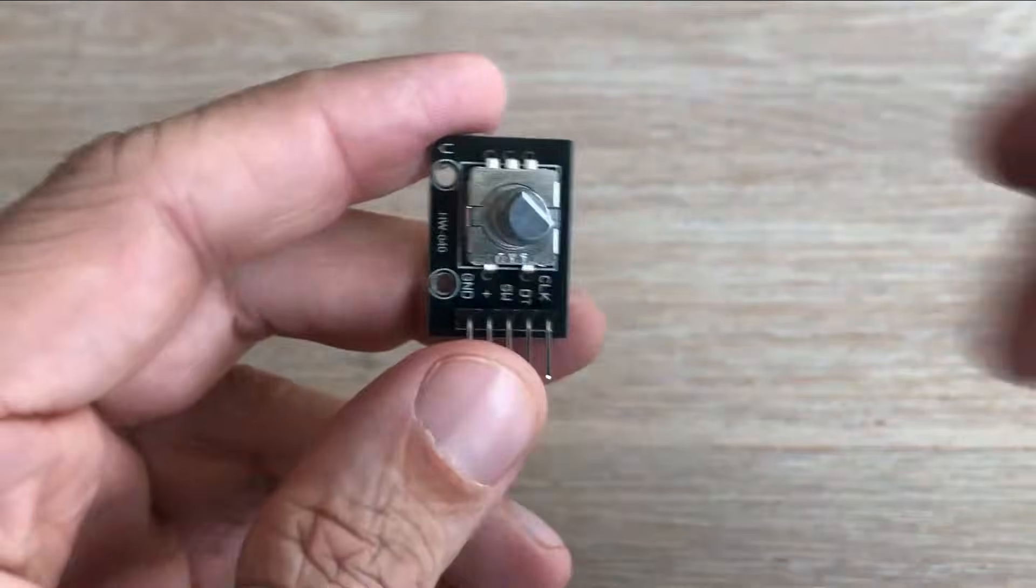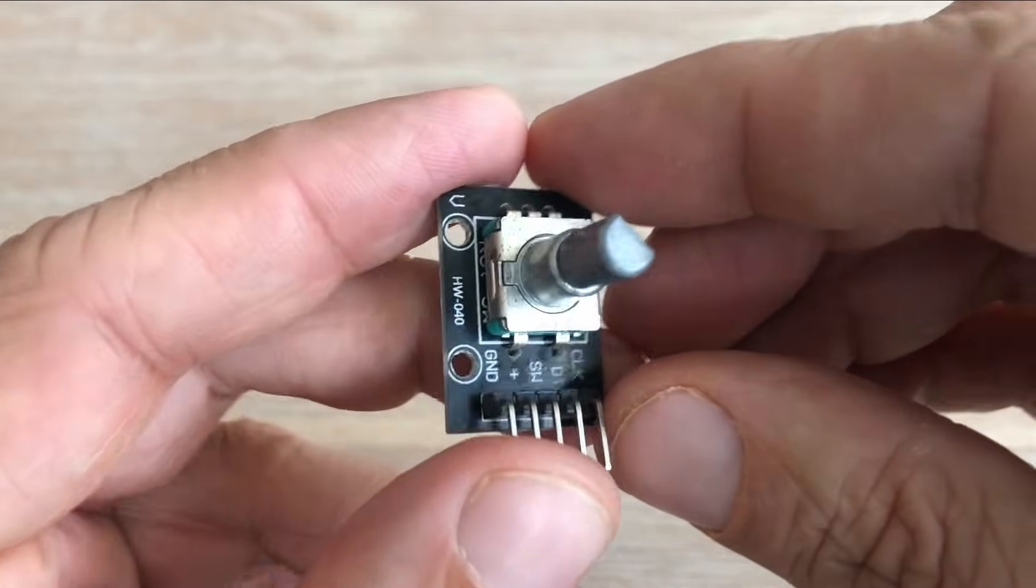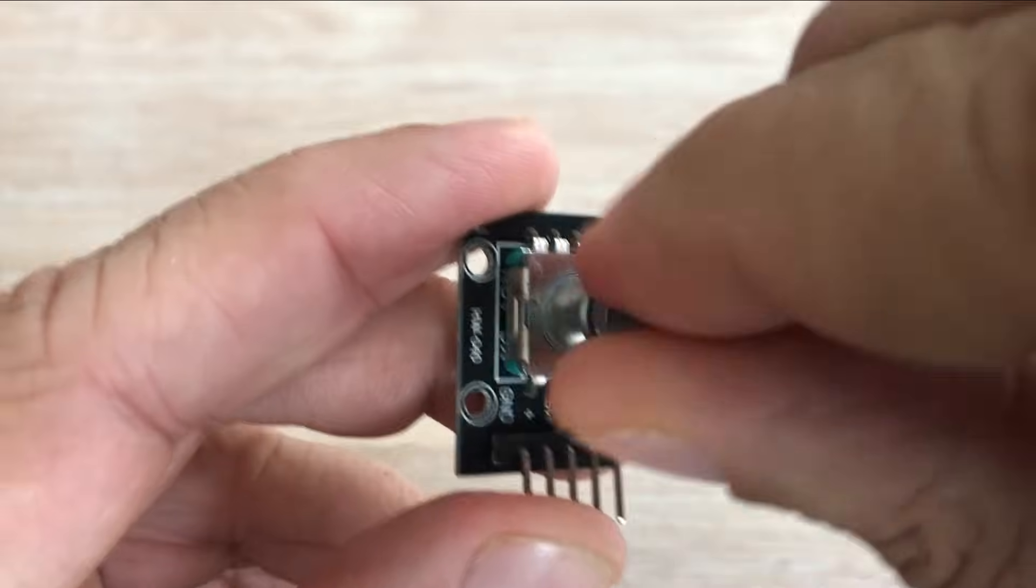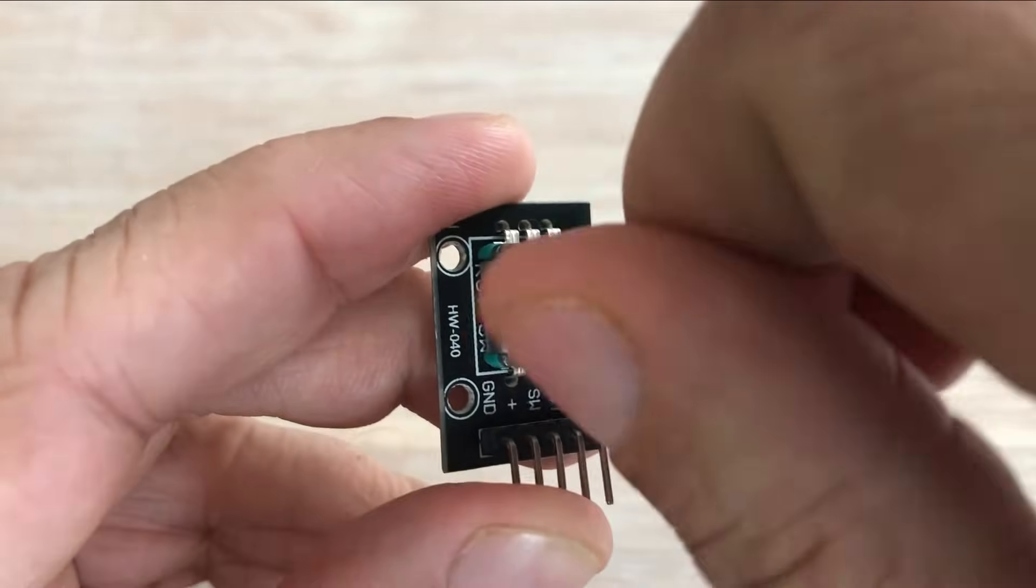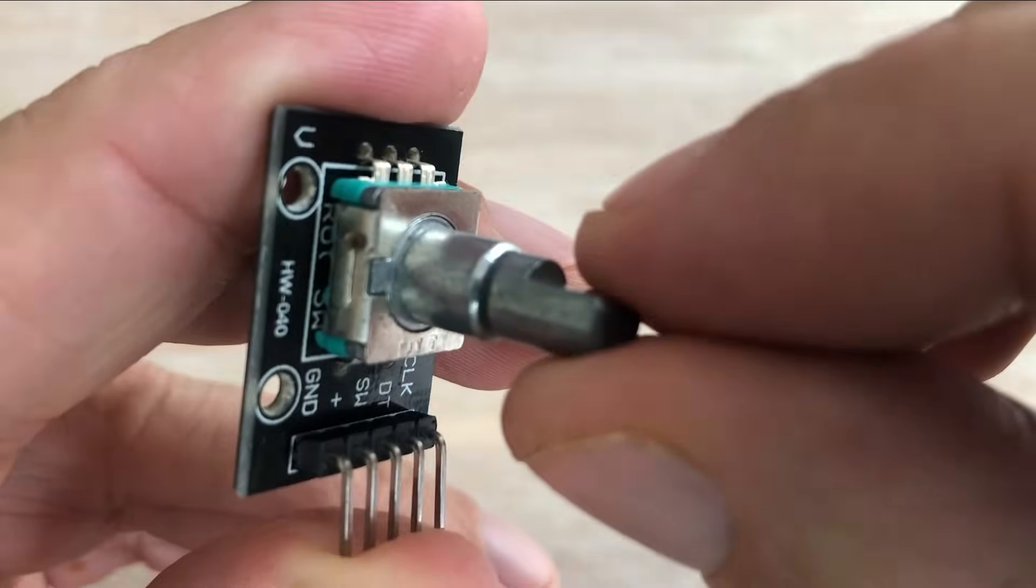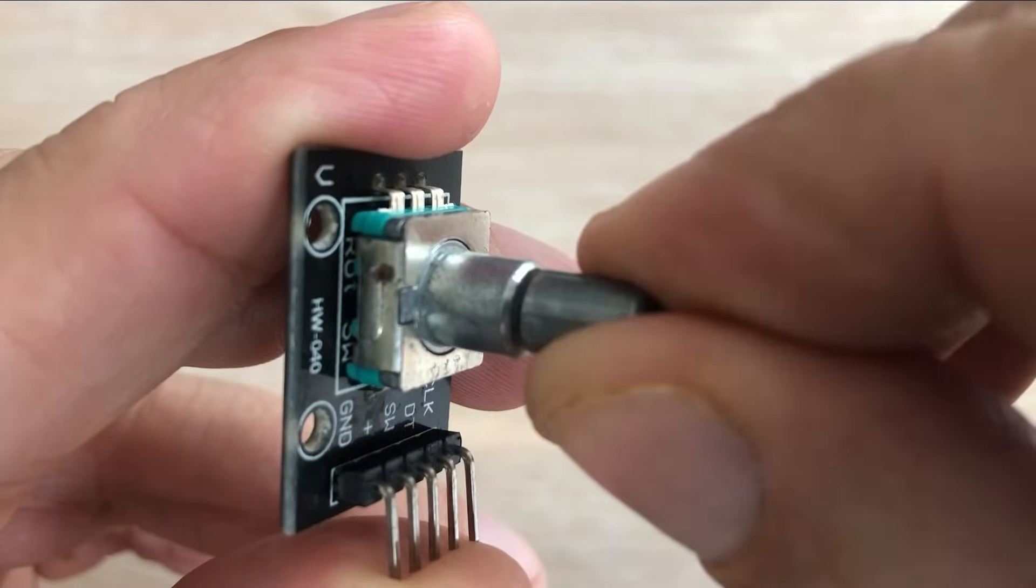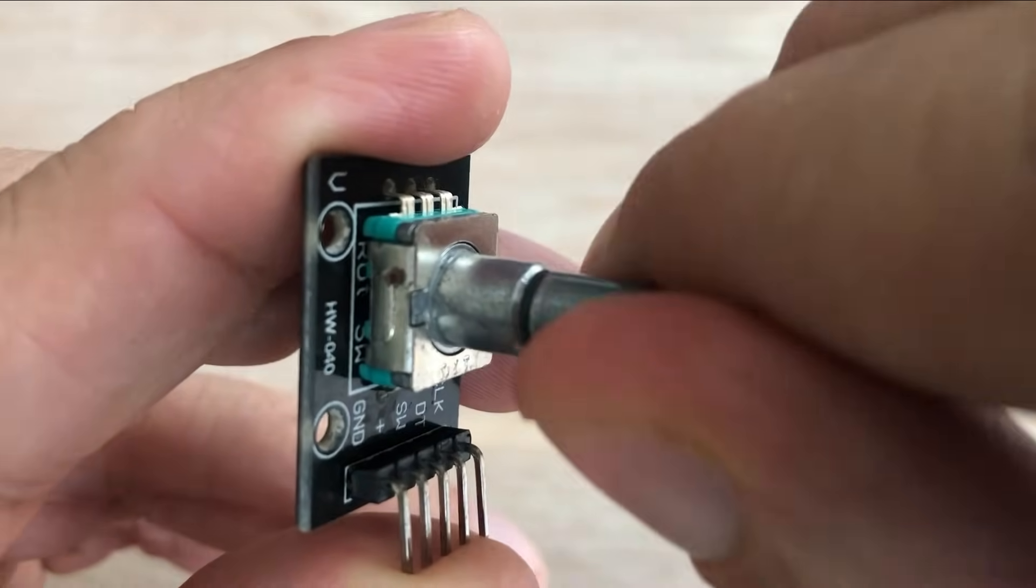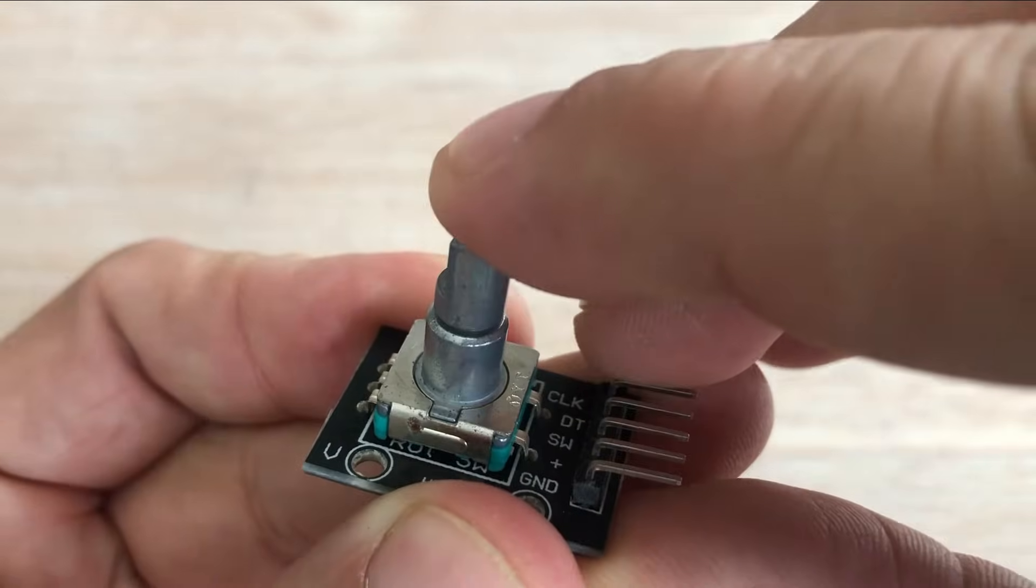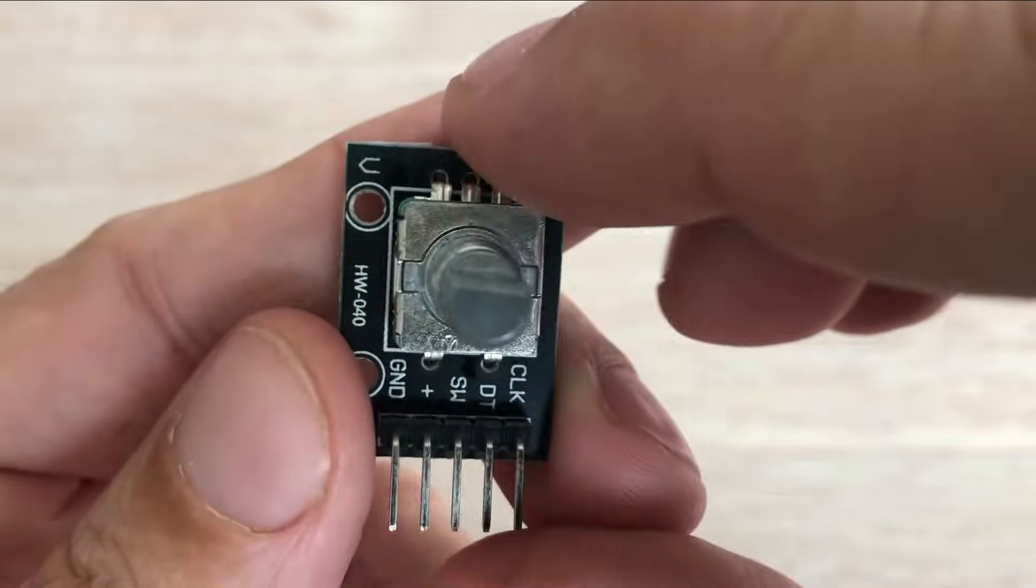Here is the rotary encoder. It looks similar to rotary potentiometer but there are some distinct differences. The encoder's shaft can turn endlessly in any direction unlike potentiometer shaft which can only turn by 270 degrees. Potentiometer shaft turns smoothly while encoder's shaft gives some intermittent resistance when turning accompanied by the clicking sound. Also when pressing the shaft it works as a momentary push button which is not the case for the potentiometer.